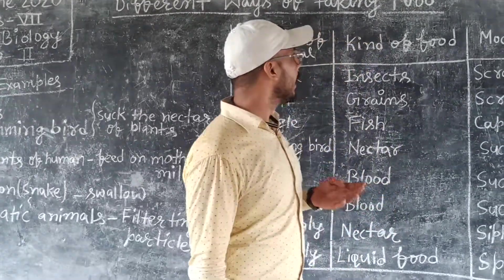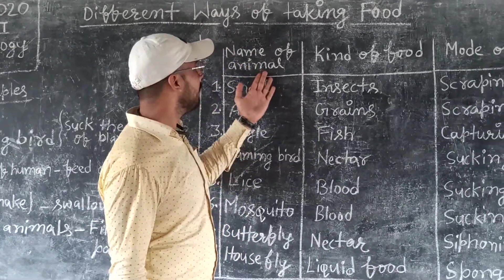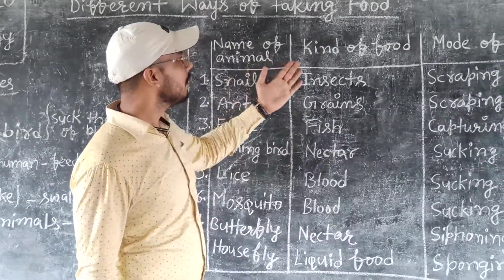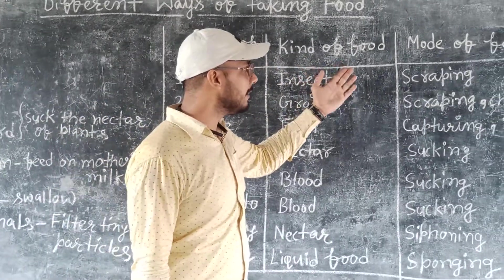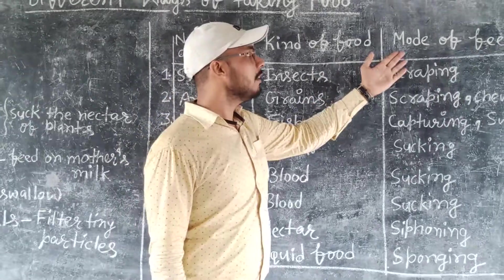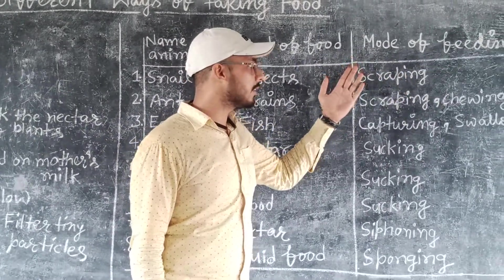You will see the name of the animal, their kinds of food — what they eat — and their mode of feeding. So we will see how the mode of feeding will be understood.